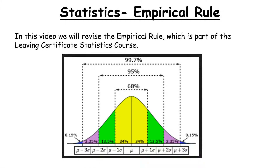Welcome to this video on the empirical rule, which is part of the Leaving Cert statistics course. It appears on both Leaving Cert Ordinary Level and Higher Level. The first example will be an Ordinary Level question and the second a Higher Level question. The empirical rule has only been asked once on the Higher Level paper, and the second example is the actual Higher Level question that was asked.